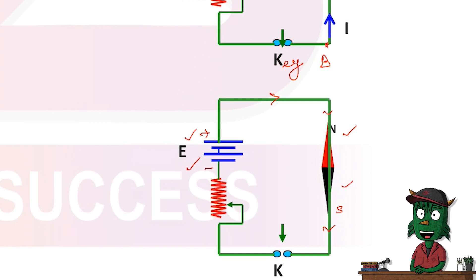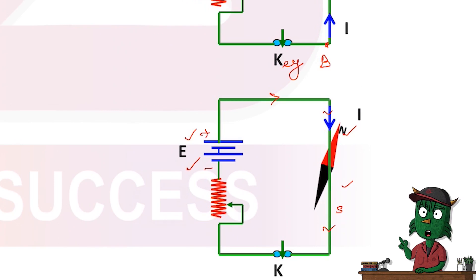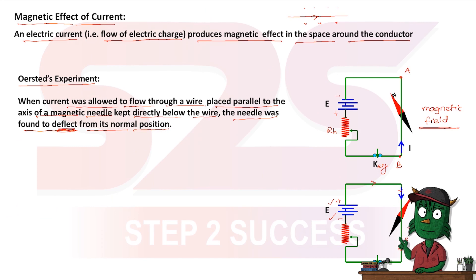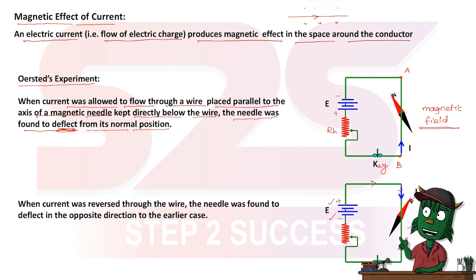Then Oersted observed that the deflection in the magnetic needle is just opposite to the previous case. When the current was reversed through the wire, the needle was found to be deflected but in opposite direction to the earlier case. So it was Oersted's experiment.